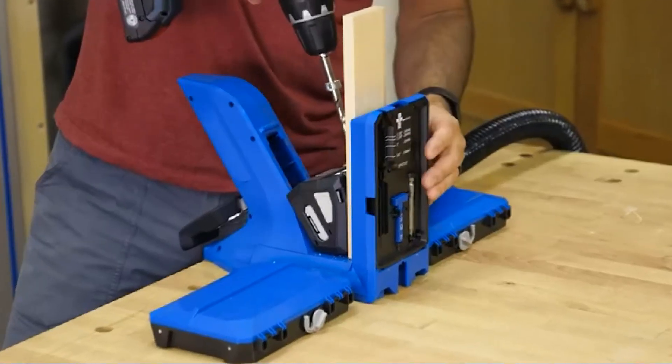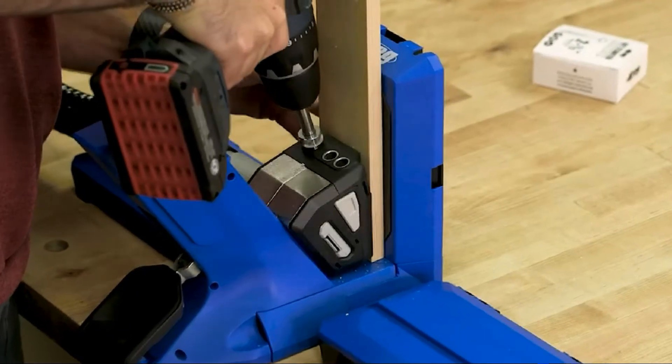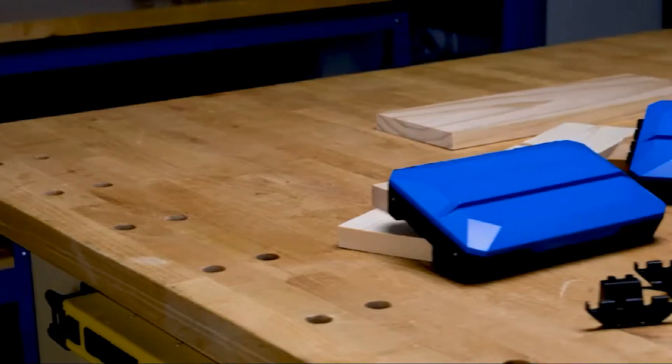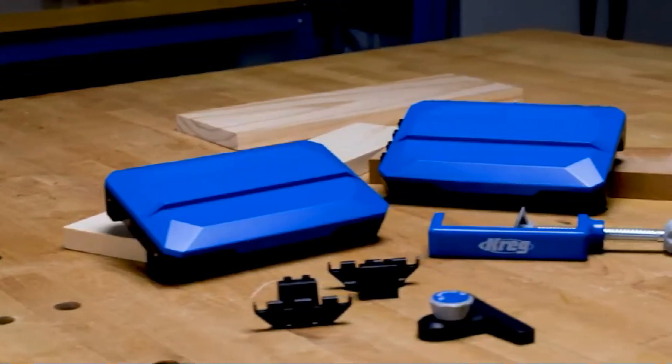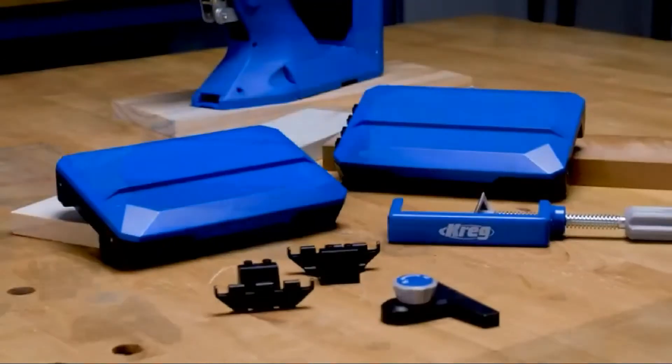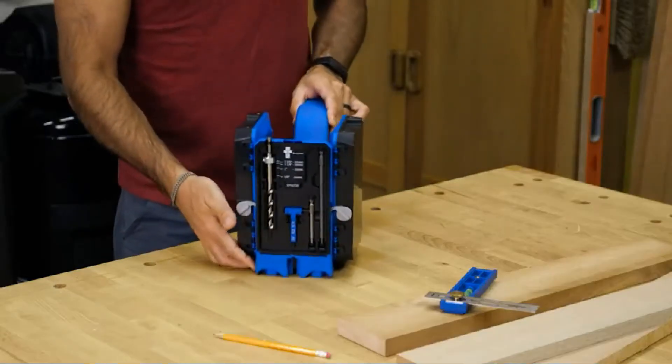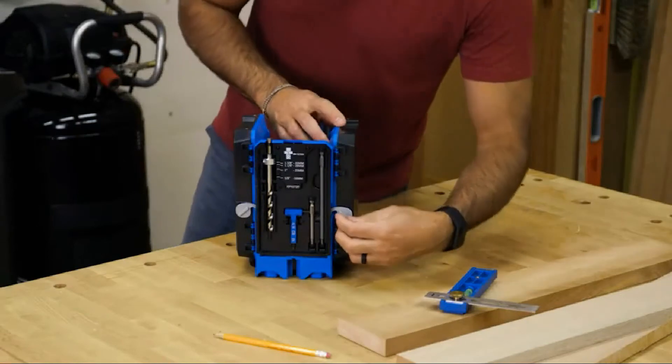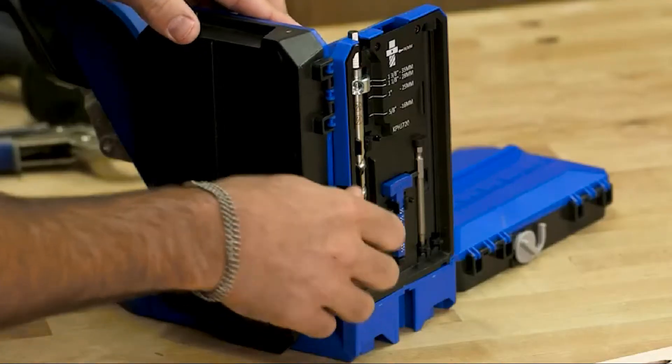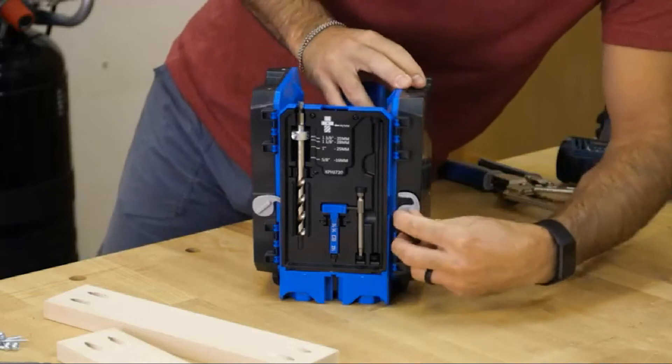This setup will make building projects using pocket hole joints faster than ever. Plus, the pocket hole jig 720 Pro comes with the Kreg docking station to create the ultimate benchtop pocket hole workstation. The docking station attaches to the jig to provide more workpiece support, a material stop, plus built-in storage, and it all folds up against the sides of the pocket hole jig 720 when not in use.